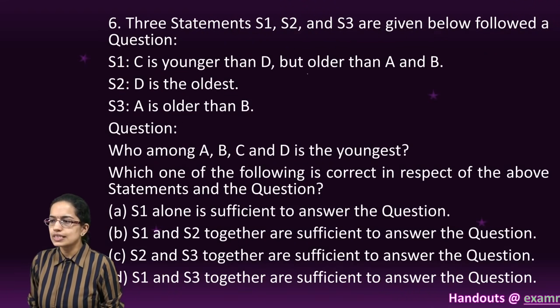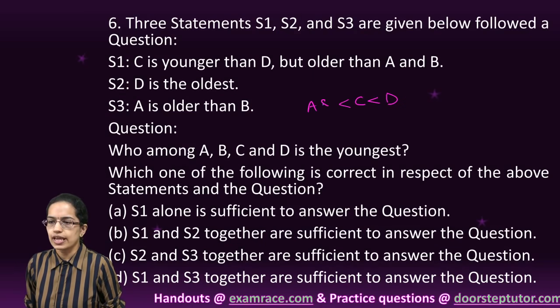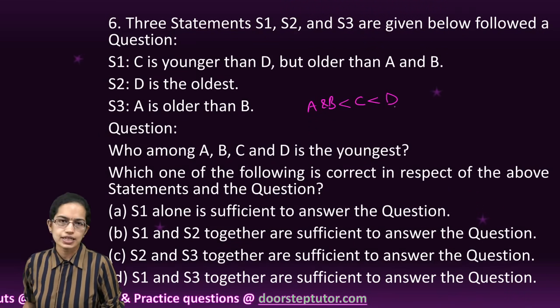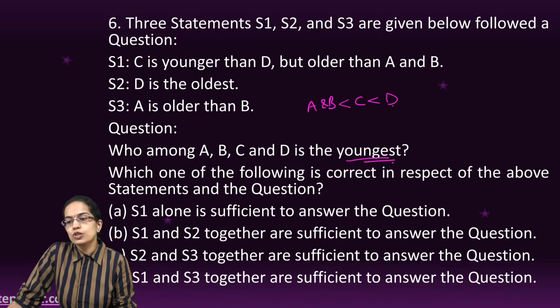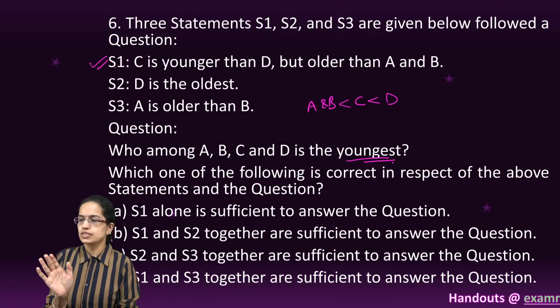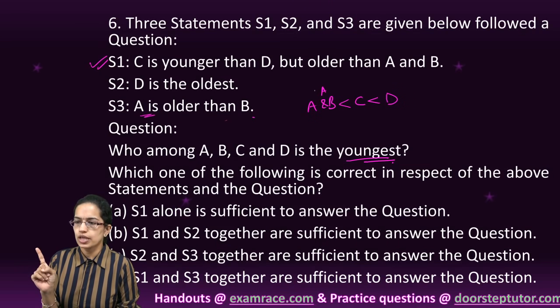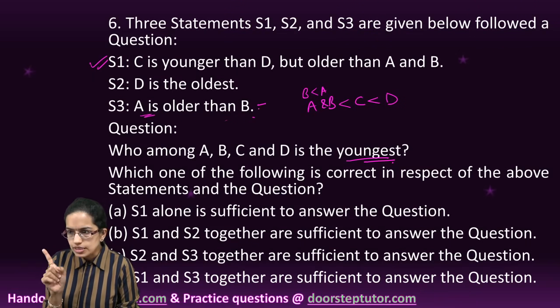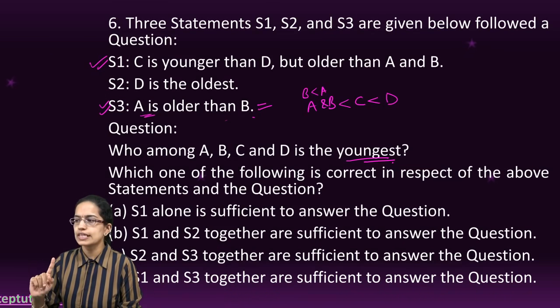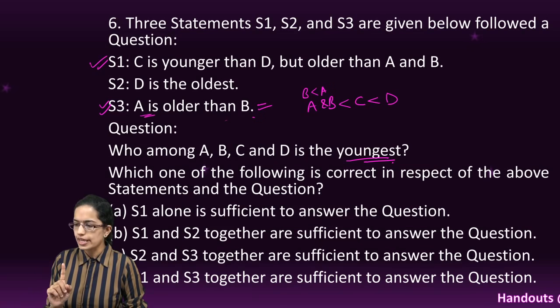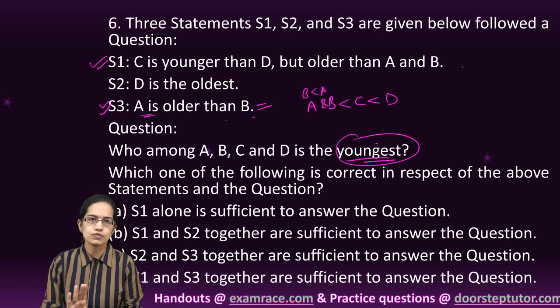The next question: C is younger than D but older than A and B. D is the oldest, which we can directly prove. The question asks to find the youngest. If it was asking for oldest, S1 alone would have been sufficient. Since it's asking for youngest, I need to understand A is older than B. That's required to prove who would be the youngest. So S1 and S3 are required to answer this question.